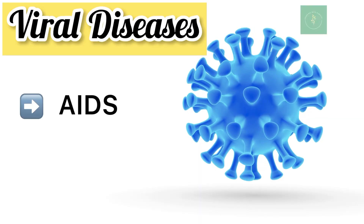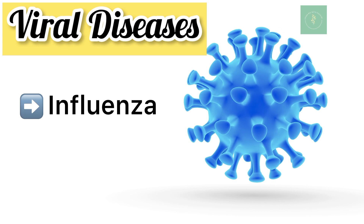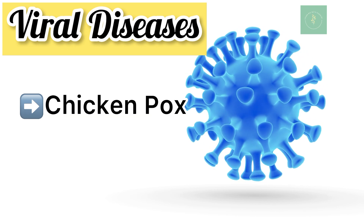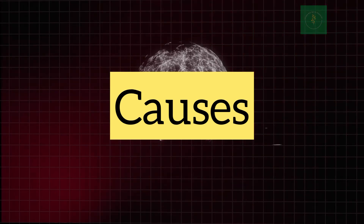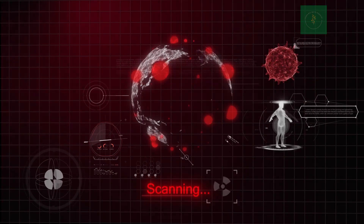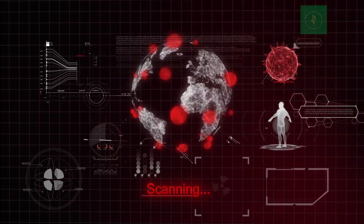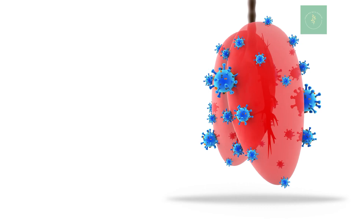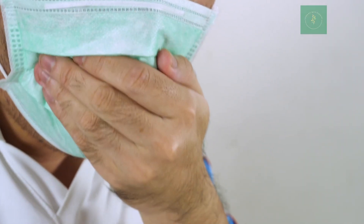Some of the viral diseases: AIDS, Ebola, Influenza, Mumps, Chickenpox, etc. How can a virus attack a body? When the body's immune system fails to fight against viruses, it multiplies and spreads to other cells causing infections.